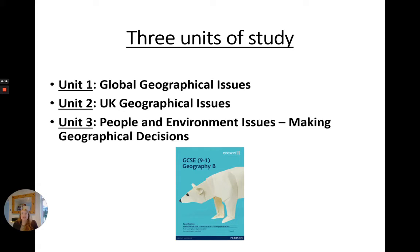The course consists of three units of study: Unit 1 Global Geographical Issues, Unit 2 UK Geographical Issues, and Unit 3 People and Environment Issues, which also includes making geographical decisions.